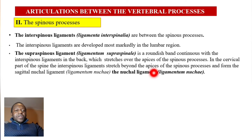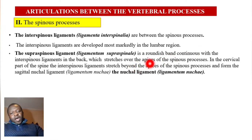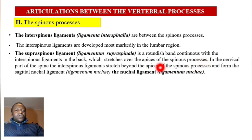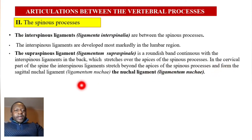On top of the spinous processes — at their apices — you find the supraspinous ligament. This is a roundish band continuous with the interspinous ligaments at the back, and it stretches over the apices of the spinous processes. In the cervical part of the spine the interspinous ligaments stretch beyond the apices of the spinous processes and form a very important ligament: the sagittal nuchal ligament, ligamentum nuchae.